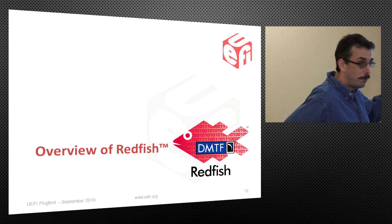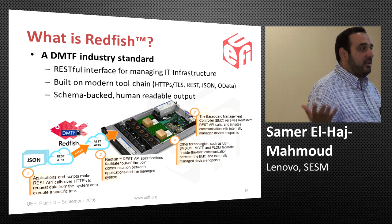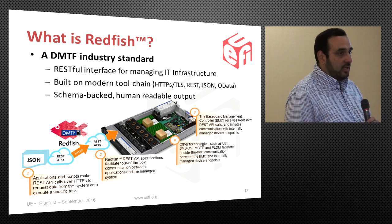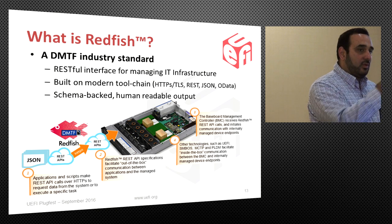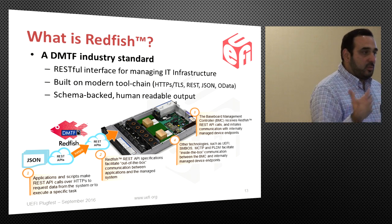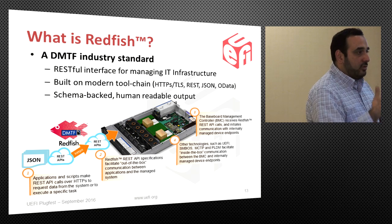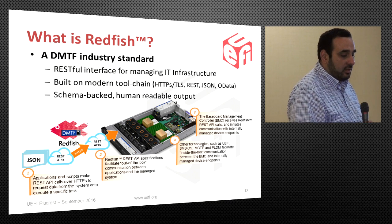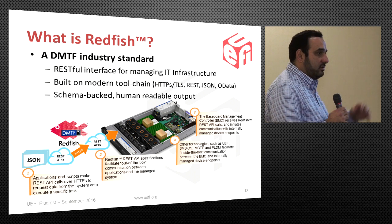REST API allows out-of-band access to the configuration settings, inventory, and hardware information inside the box. But it ties to other standards like UEFI for what happens inside the box. To the outside world, you're talking REST API, expressing settings in JSON format - JavaScript Object Notation. All of those requests and data are translated inside the box to other standards - in this case to UEFI HII settings and transported through UEFI protocols. That's at a very high level what the picture looks like.